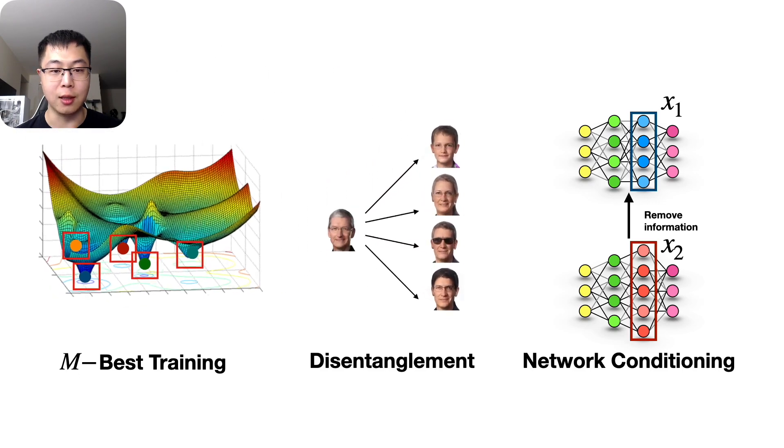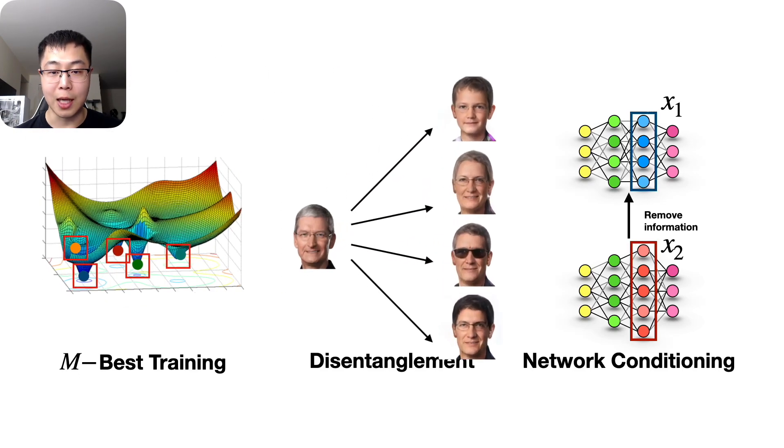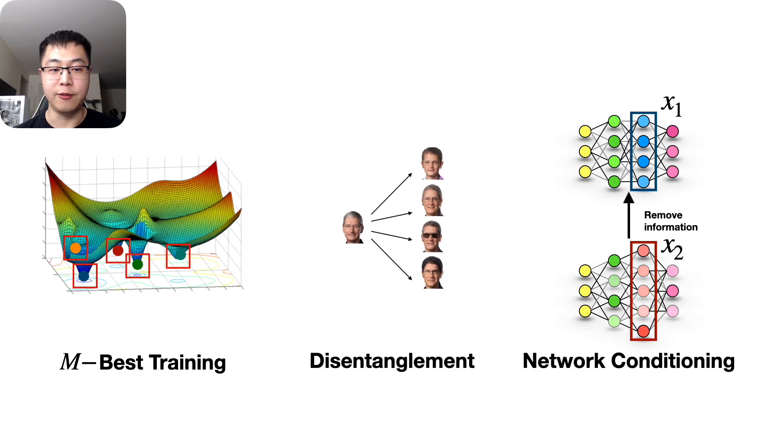Minimizing distance correlation in the latent space offers a mechanism to get disentangled representations. And finally, partial distance correlation provides a strategy for conditioning, so that we can answer questions of the form what has x2 learned above and beyond what x1 has learned.